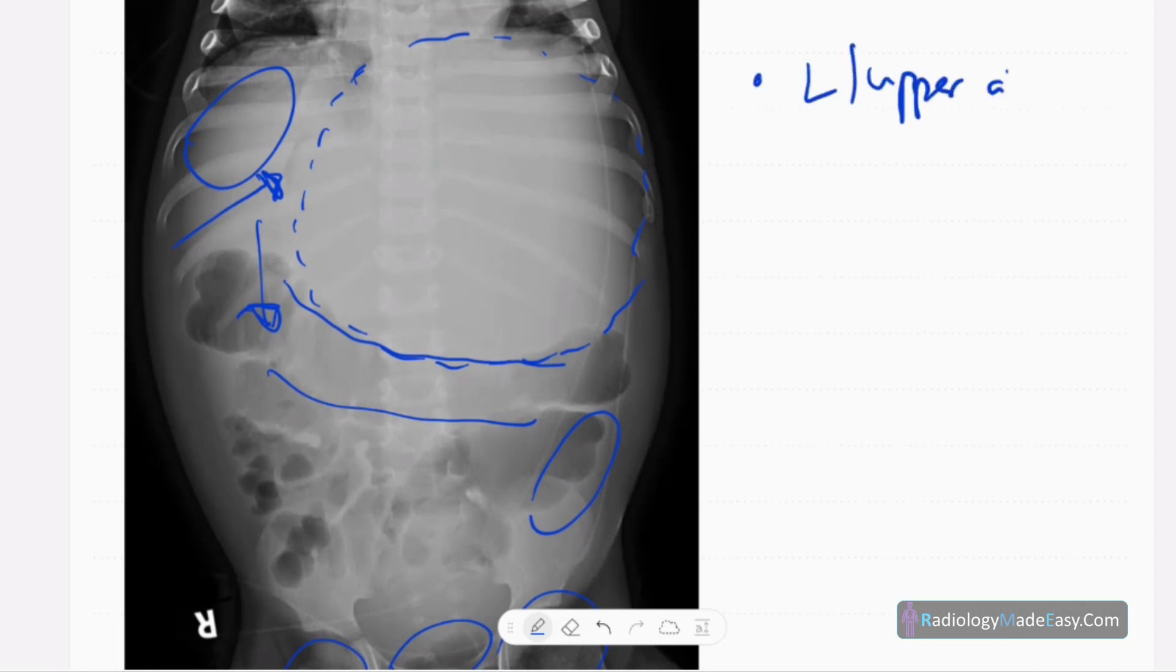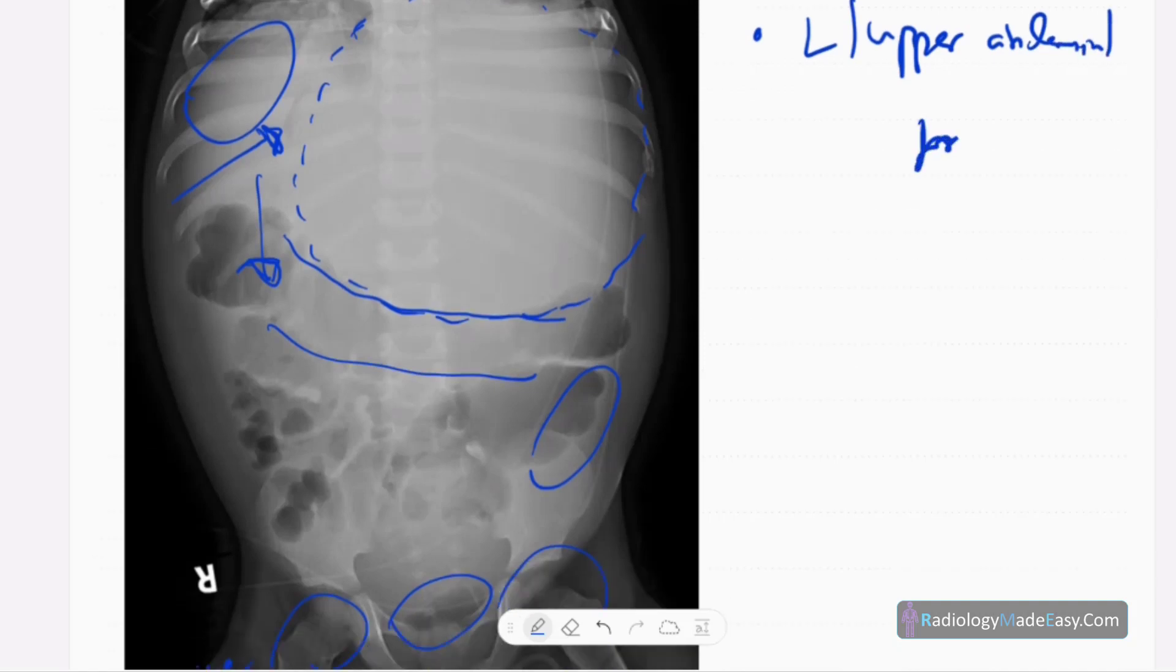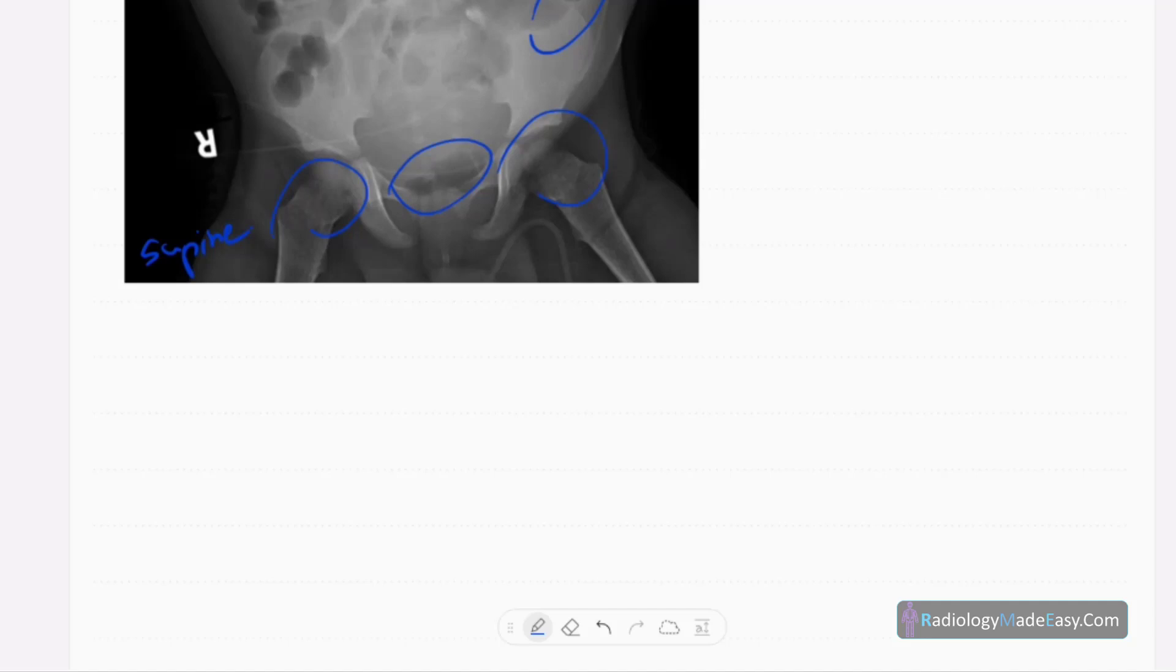So there's a left upper abdominal mass. There are no calcifications in the x-ray. However, in this case, the diagnosis is neuroblastoma.